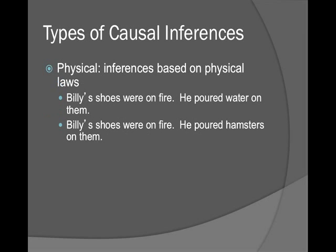Some types of causal inferences: Physical laws — inferences based on the way the world works. If Billy's shoes were on fire and he poured water on them, that makes sense. If he poured hamsters on them, people get very confused and stare at 'hamsters' because it breaks a physical law. In fantasy or sci-fi with different laws, if they don't explain those laws it can be very confusing — that's why most authors do world-building, explaining how the world works in their book.